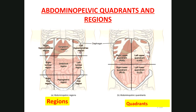The nine regions are made by drawing two lines on either side of the umbilicus and then crossing those lines above and below. Know the names: the right and left hypochondriac regions — hypo means below, chondral means cartilage — so these are located below the rib cartilages. The liver is in the right hypochondriac region, and the spleen and stomach are in the left hypochondriac region.